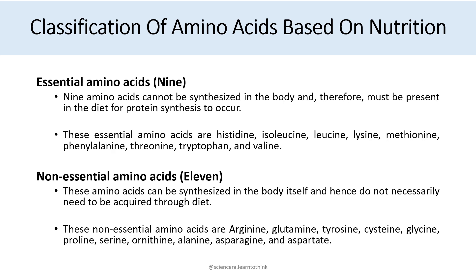Then we have non-essential amino acids — there are 11 of them. These amino acids can be synthesized in the body itself and hence do not necessarily need to be acquired through diet. The non-essential amino acids are arginine, glutamine, tyrosine, cysteine, glycine, proline, serine, ornithine, alanine, asparagine, and aspartate.